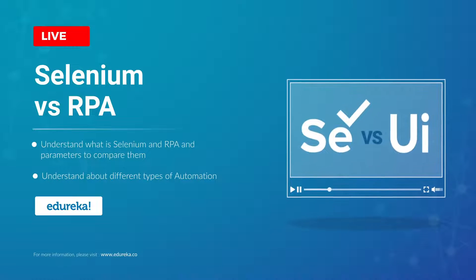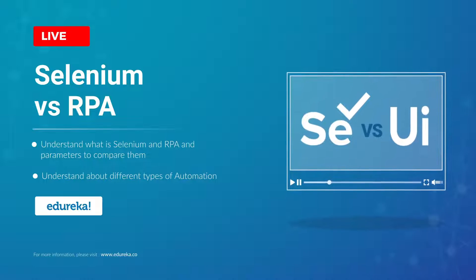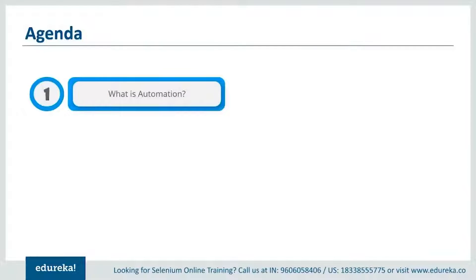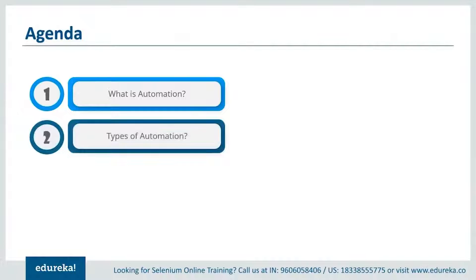Let's take a look at the agenda for this session. First, we'll start by understanding what automation is and take a real-time example demonstrating its advantages. Then we'll discuss the different types of automation that exist, followed by a brief introduction to automation testing and business process automation — the major fields where one can build a career.